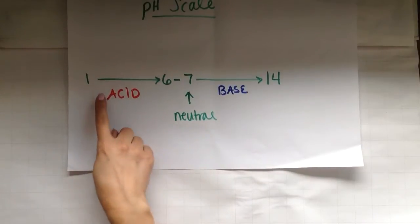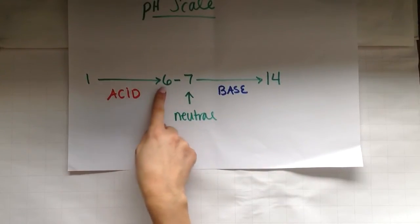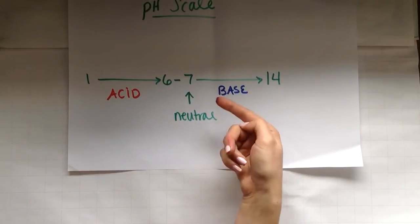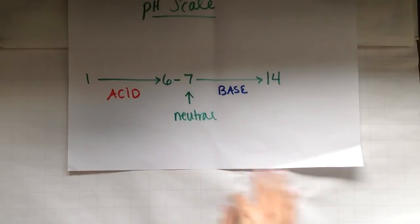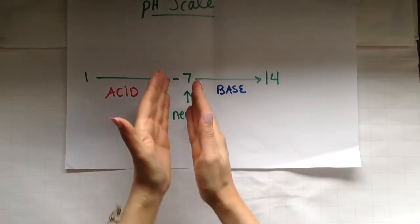So the more acidic it is, the more H plus concentration. The more basic it is, the less H plus concentration. And neutral means equal concentrations of H plus and the OH minus.